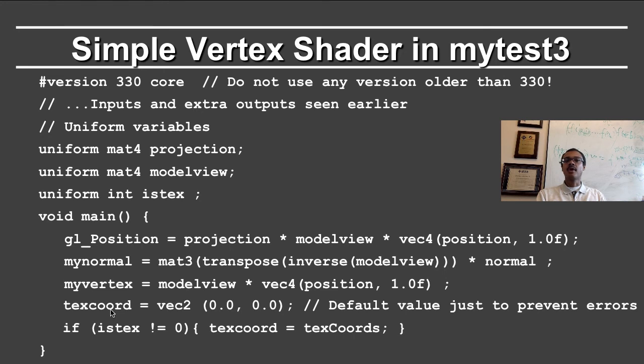Finally, we come to the texture coordinates. To avoid errors, I initially set the texture coordinate to 0, 0, which is just the default value to prevent errors. In the next step, if texturing is turned on, then I have texture coordinates that were input to the vertex shader, and I just set texcoord equal to that. These texture coordinates will then be interpolated and rasterized, and they will be passed on to the fragment shader for texturing.